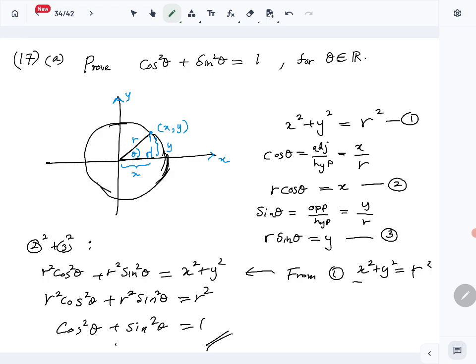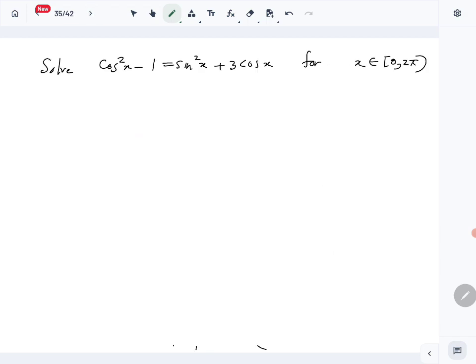And we have the Pythagorean identity. So that is the proof of the first part. Then next part is an application of that Pythagorean identity. So we have to solve this trigonometric equation for this range—x has to be in this range.